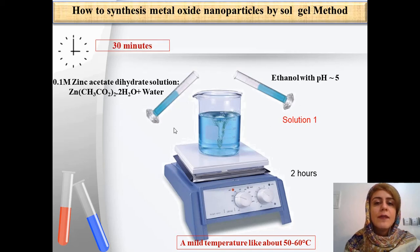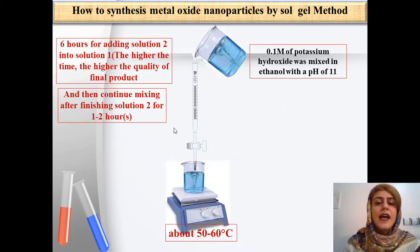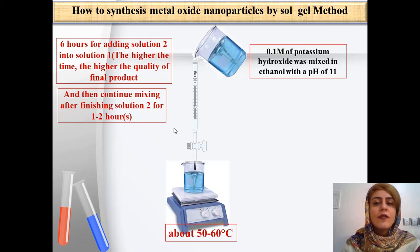Stirring is carried out at a temperature of between 50 and 60 degrees centigrade. Then a solution of 0.1 molar of potassium hydroxide is mixed with ethanol.